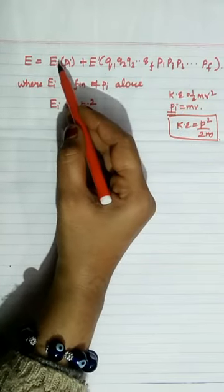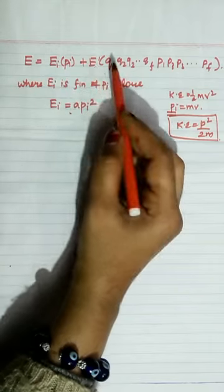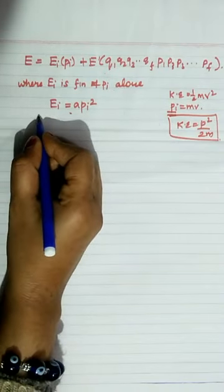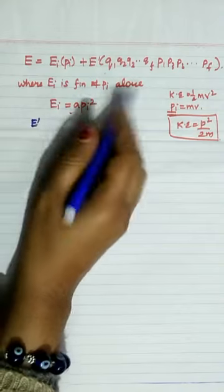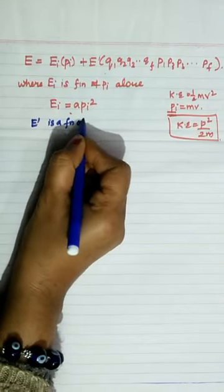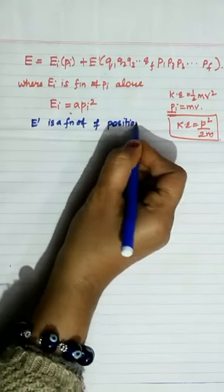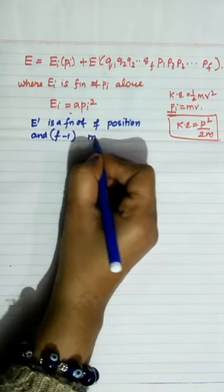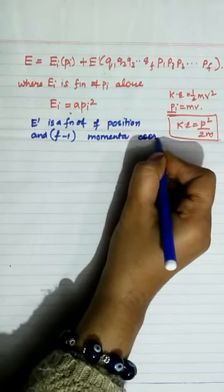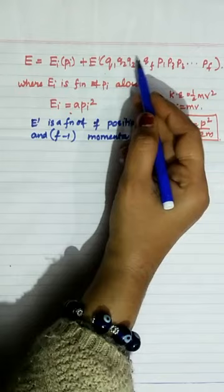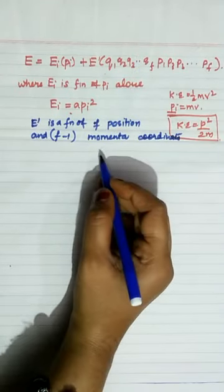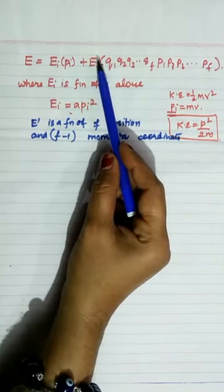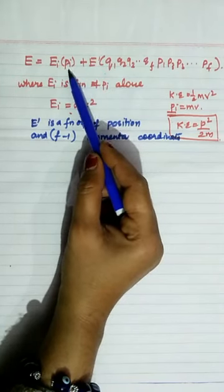So E' is a function of F position coordinates and F−1 momentum coordinates, meaning E' depends on (F−1) momentum variables after separating out the i-th momentum term.